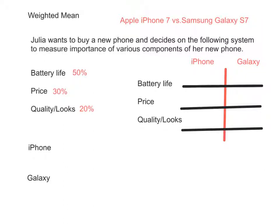In this video we're going to talk about weighted means. Weighted means can help you decide when some things are more important than others. In our example, we're going to talk about Julia.